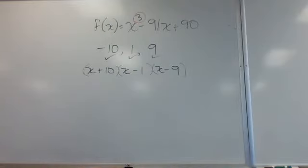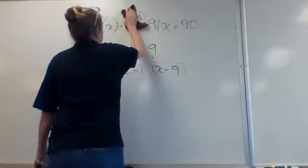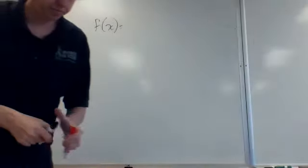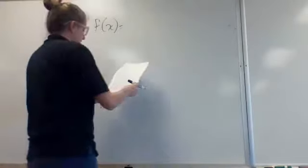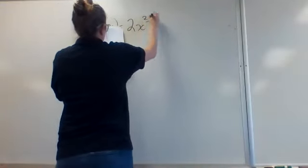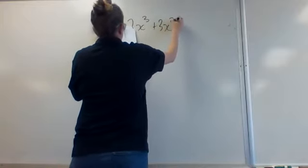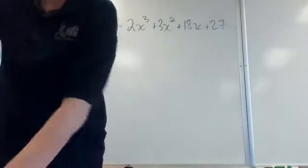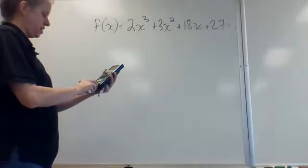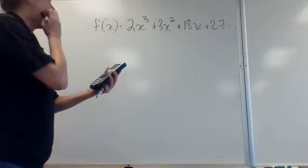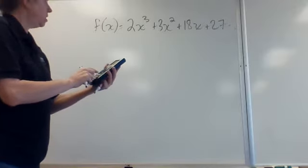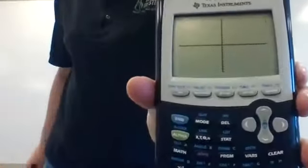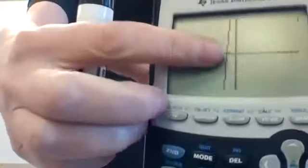Part B asks for the factorization. Remember how we go from zeros back to the factors they came from? Negative 10 gives x plus 10, 1 gives x minus 1, and 9 gives x minus 9. Because if you set x plus 10 equal to zero and solve for x, you get negative 10. Now looking at number 17: f of x equals 2x to the third plus 3x squared plus 18x plus 27.